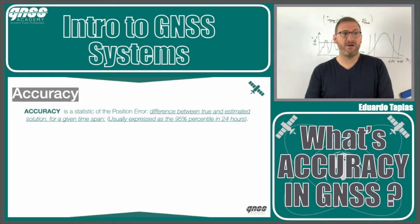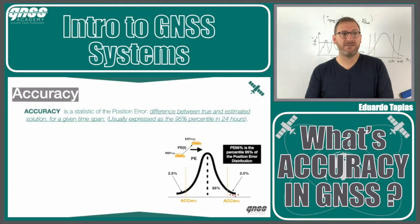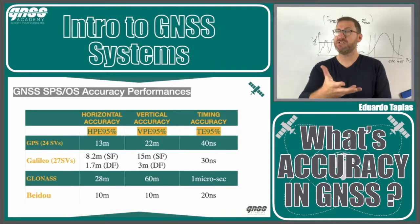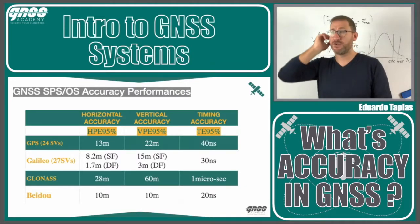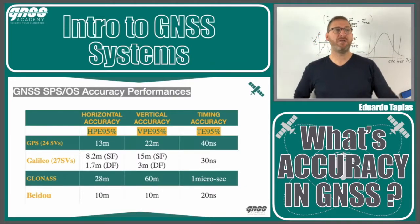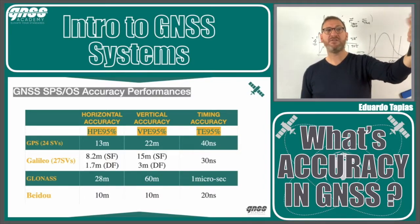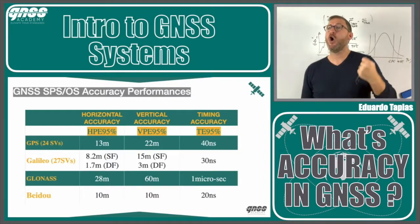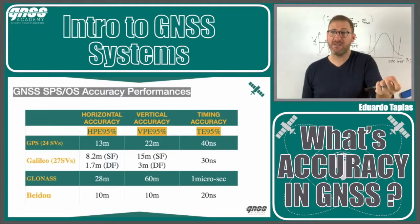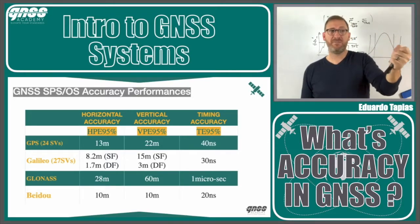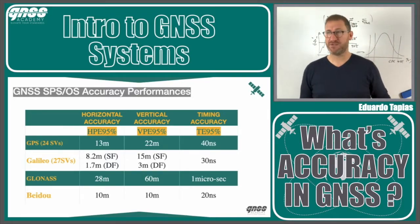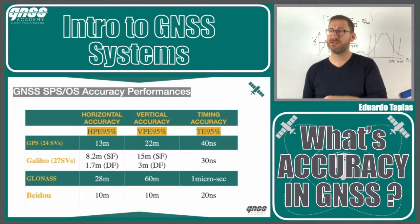Looking at published standards, GPS with 24 satellites publishes typical values of 13 meters horizontal accuracy at 95% and 22 meters vertical accuracy at 95%.